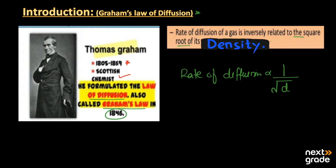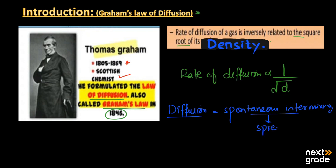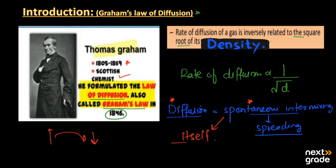One thing you need to remember is what diffusion is. In our previous lesson, we learned that diffusion is the simple spontaneous spreading or intermixing of gas molecules. This process always takes place from the region of high concentration to the region of low concentration. The word spontaneous means a process that happens by itself and does not require energy.